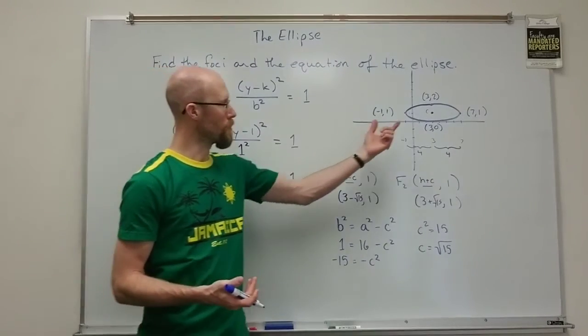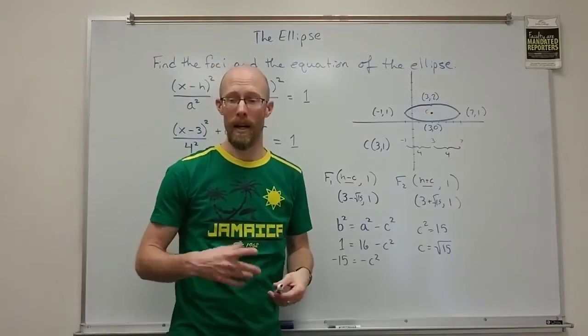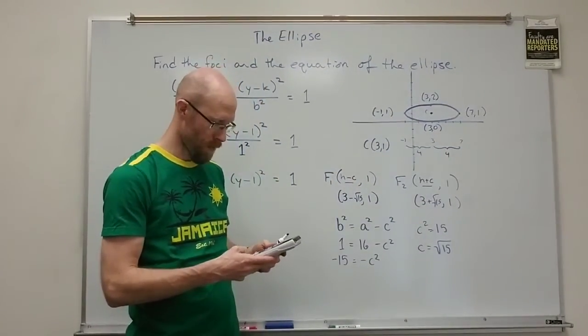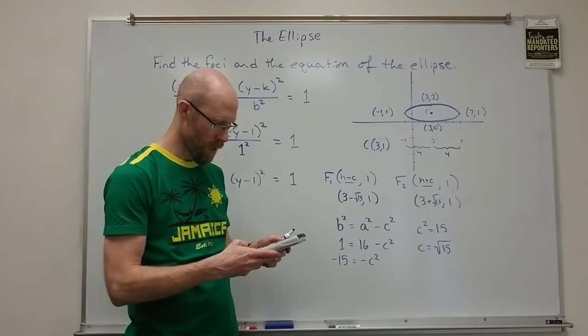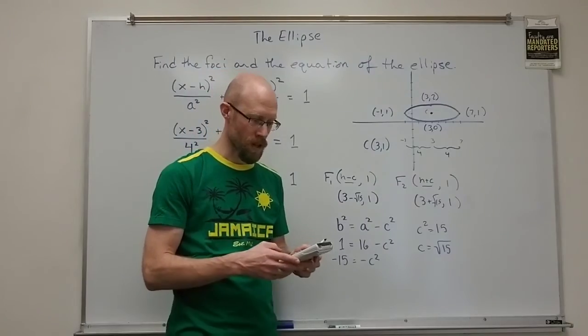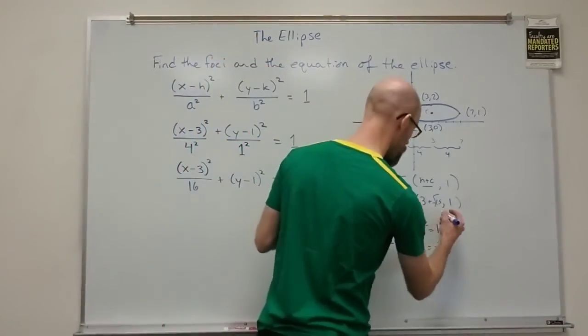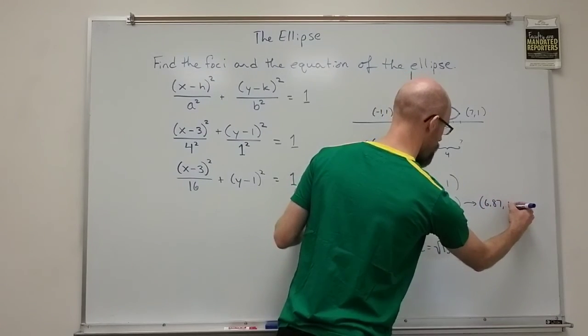However it doesn't give me much information about this graph. I don't know exactly where those are. I can get a better idea by using a calculator and putting that in decimal form. 3 plus root 15 is around 6.87. So this one over here is about 6.87 comma 1.